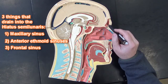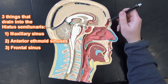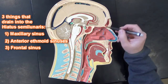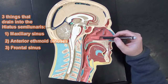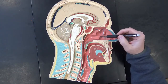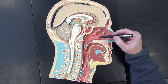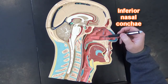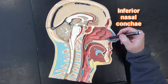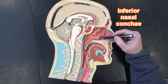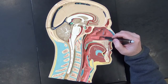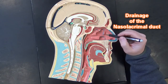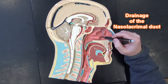Here we can see the frontal sinus, and there's a hole that's going to connect the frontal sinus to this area. Down here we've got the inferior nasal concha, and if we cut a little portion of that out so that we can see the hole in here, this hole is going to be for drainage of the nasolacrimal duct.